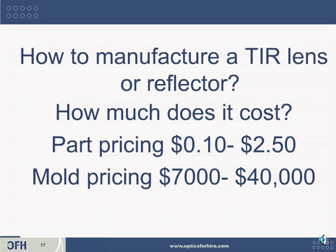As for costs, there is a huge variety. Once in volume production for a small plastic lens, you could pay anywhere from $0.10 to $2.50 for a larger lens with multiple elements. There are also upfront tooling charges, with mold prices ranging from $7,000 to $40,000, depending on the number of cavities, the difficulty, and the size of the lens. Reflectors can be cheaper or more expensive depending on whether you're using a simple aluminum coating or something fancier.